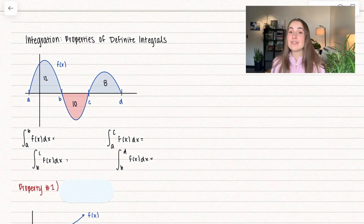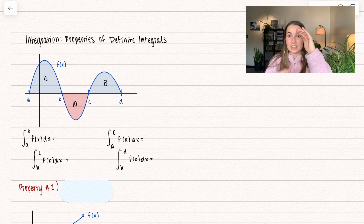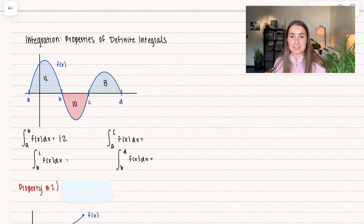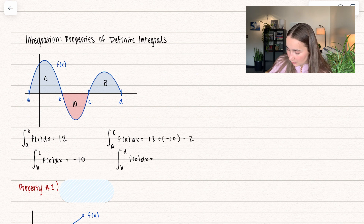Let's dive into it. I have this from the previous video — a function along with the corresponding areas. Let's revisit what it means to take the definite integral: we are finding the area between the function and the x-axis. When taking the definite integral from a to b, we find this first area, equal to 12. Working from b to c, we are below the x-axis, giving a negative area of negative 10. Going from a to c, we add those two areas together to get 2. Working from b to d, we add negative 10 plus 8, which equals negative 2.